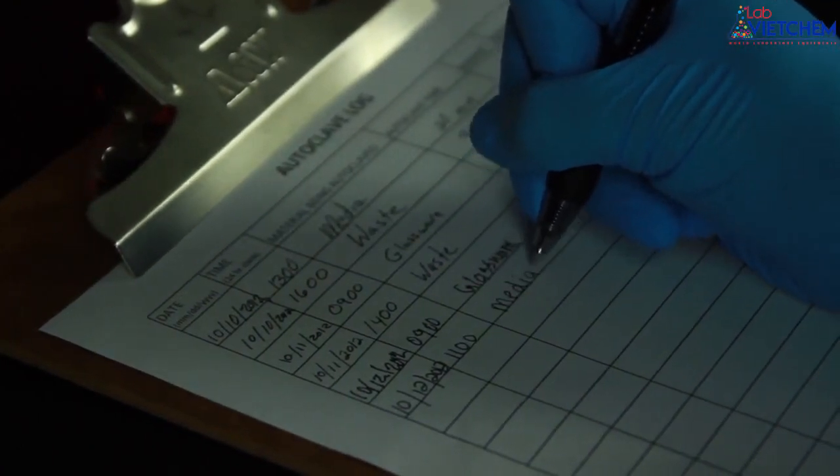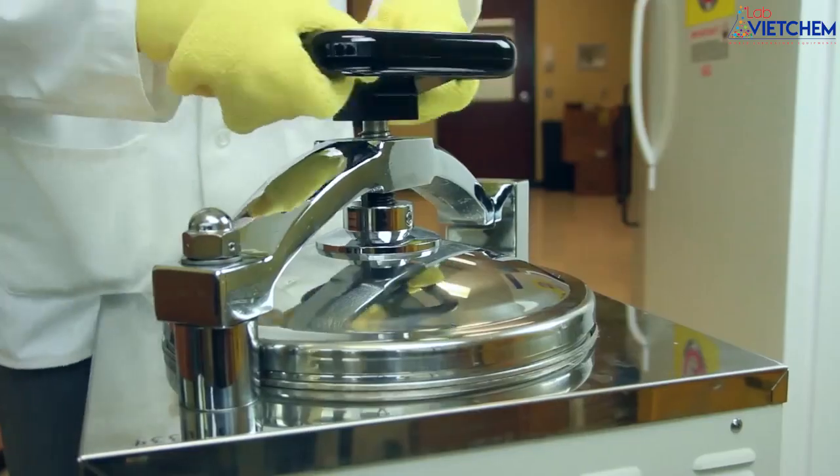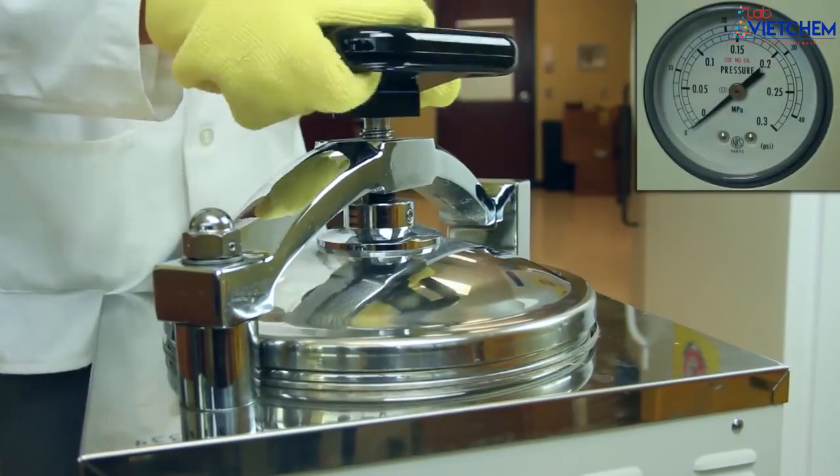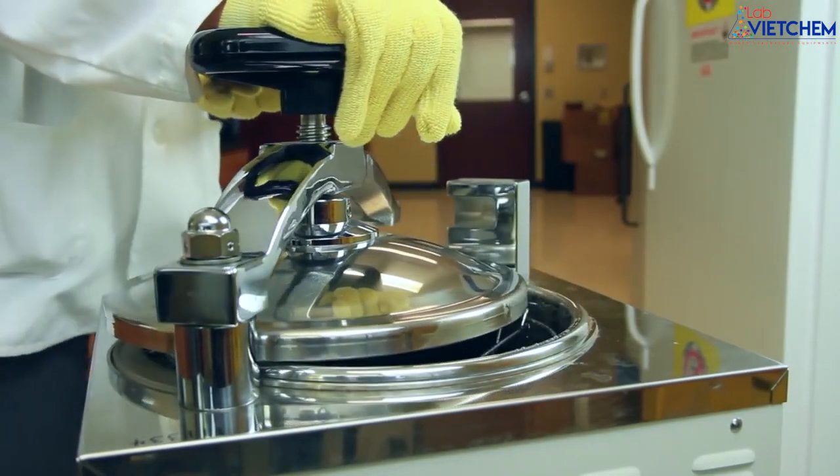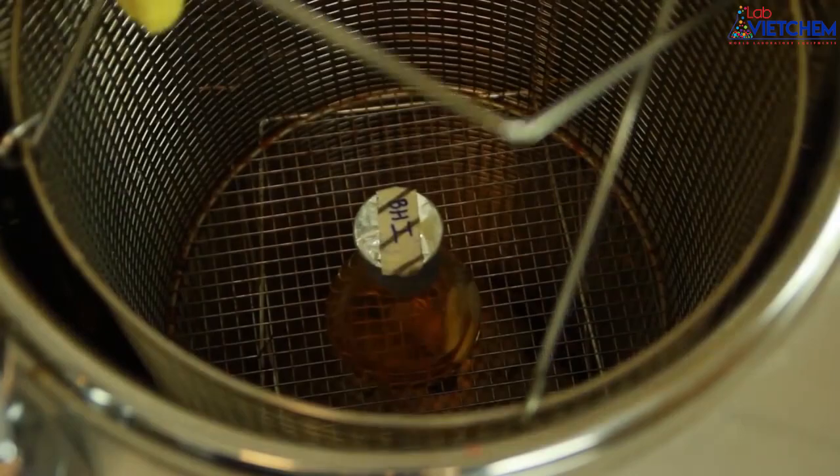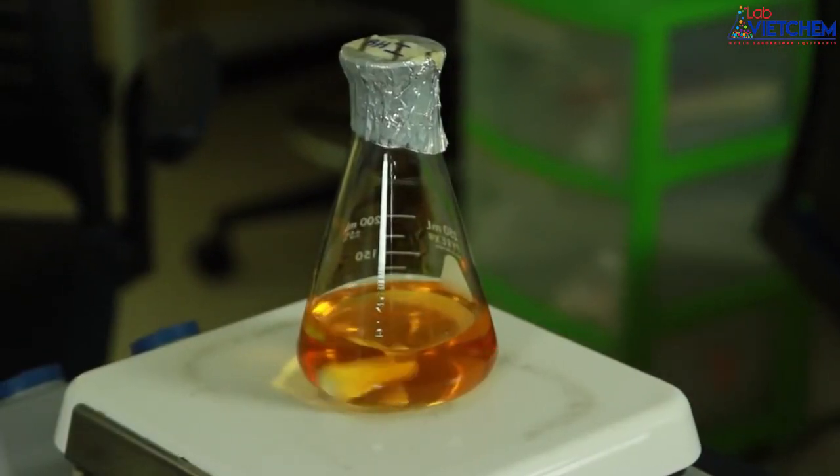While it's running, enter the date and time and the operation details in the log and initial. Once the cycle ends and the pressure gauge reads 0 psi, slowly open the door wearing heat-resistant gloves. The black lines are visible on the autoclave tape indicating that the proper temperature was reached.